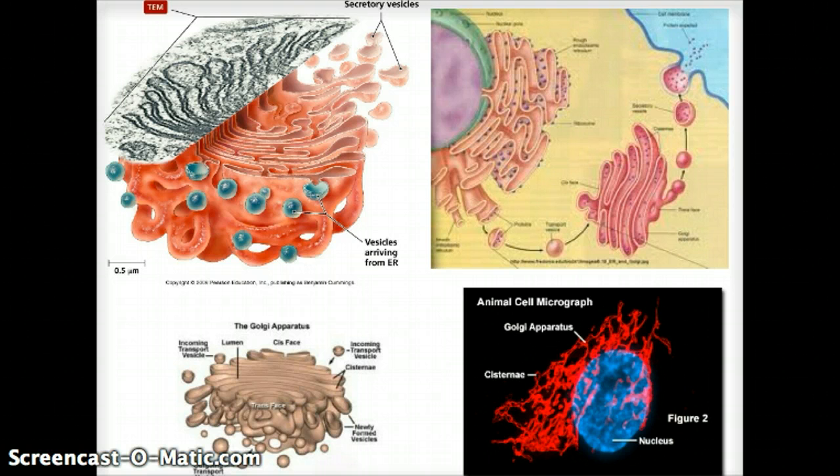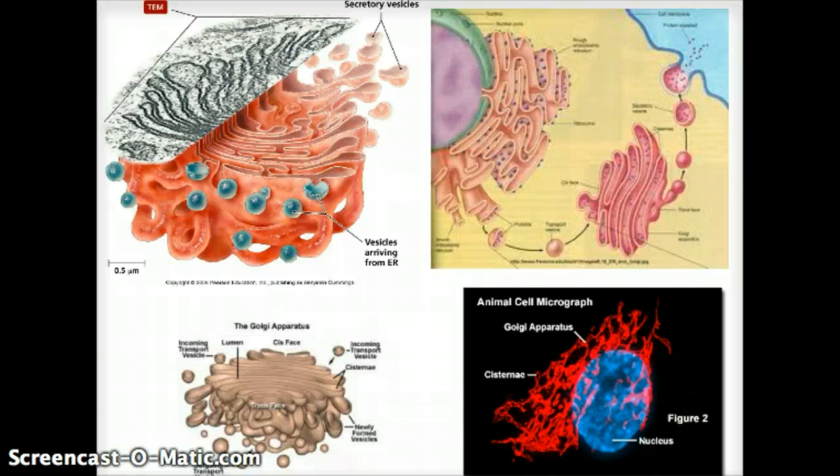So the Golgi, after packaging it, it sequesters, it squeezes it out, off itself, it pinches it off, and then that vesicle fuses with the cell membrane and lets the material go out. And what's nice about it, that the process, this process, the cell membrane itself can get renewed, because the vesicle becomes part of the cell membrane. So that's the Golgi apparatus.